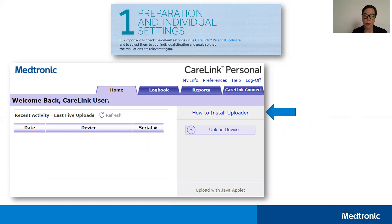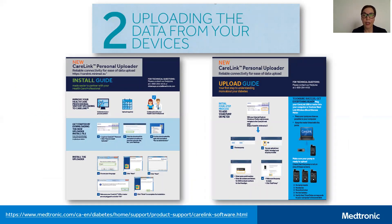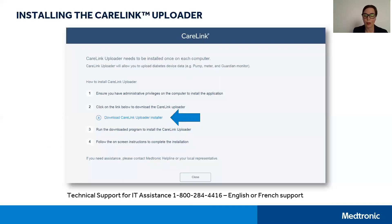Now you're ready to install the uploader. From your homepage, click on how to install the uploader. These are the two PDFs that I recommended you download at the beginning of this video — now might be a good time to do so if you haven't already. Clicking on how to install the uploader will bring you to a screen which will walk you through the process. This is a one-time process and you'll need to have administrative privileges on your computer in order to proceed. Click on Download CareLink Uploader Installer and run the downloaded program to install the CareLink Uploader.